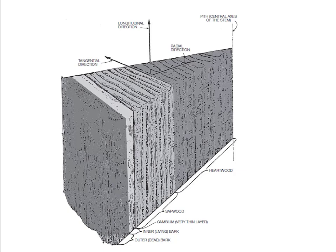The tree stem includes bark, cambium, wood, and the pith. The bark is the exterior covering of the tree — it has an outer layer and an inner layer. The outer layer is dead and corky, with great variability in thickness depending on the species and age of the tree. The inner layer is the growth layer for the bark but is not part of the wood section of the tree. The cambium is a very thin layer of cells located between the wood and the bark — it's the location of all wood growth. The pith is the central core of the tree; its size varies with the tree species, ranging from barely distinguishable to large and conspicuous.